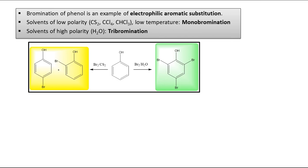First of all, bromination of phenol is an electrophilic aromatic substitution reaction. That means the attacking reagent is electrophilic in nature — it is electron deficient. I am drawing the structure of phenol, and in general the electrophile can be written as E+. So the attacking reagent is an electron-deficient species.